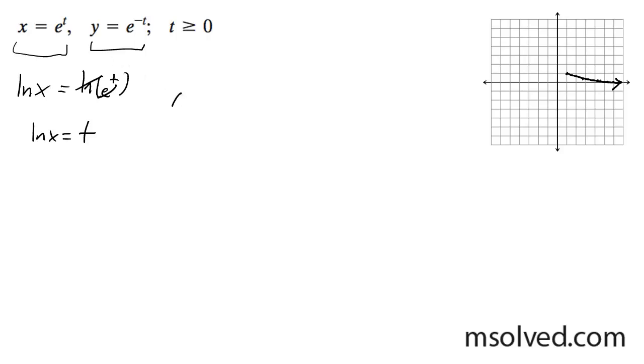Plug this into the equation up there. So we get y is equal to e raised to the negative ln x. This cancels out. We get y is equal to negative x.